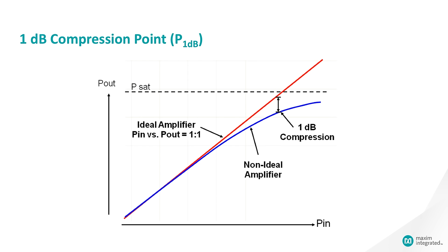Linearity is an important specification for nearly all RF devices. The graph here shows the transfer function for an amplifier. Input power is on the horizontal axis, and output power is on the vertical axis. In the ideal case, which is shown by the red line, output power rises linearly with input power, regardless of either the input or the output power. The gain of the amplifier is equal to the slope of the line.